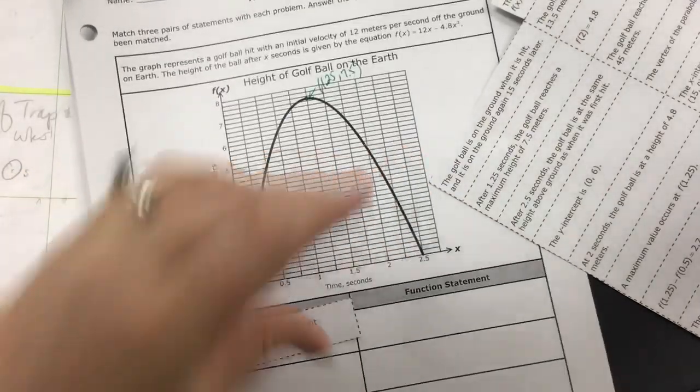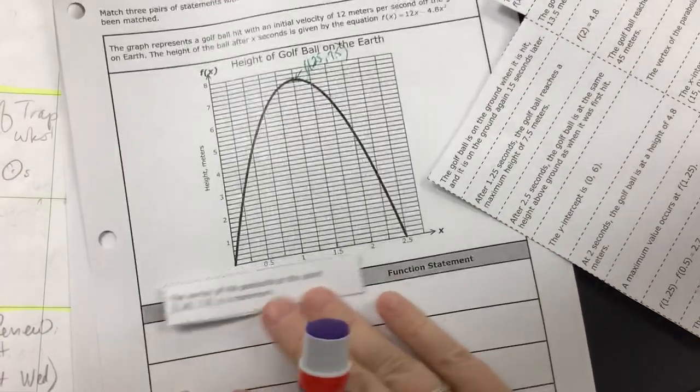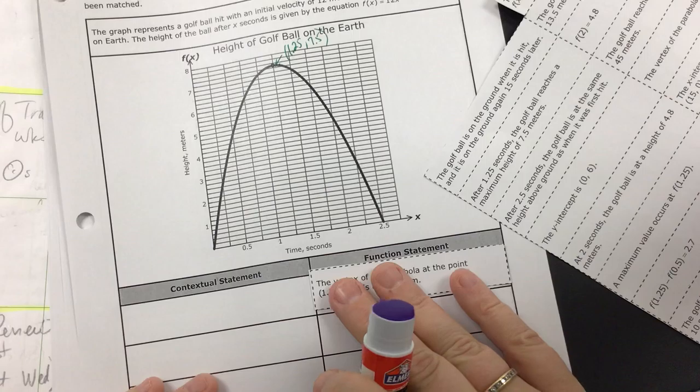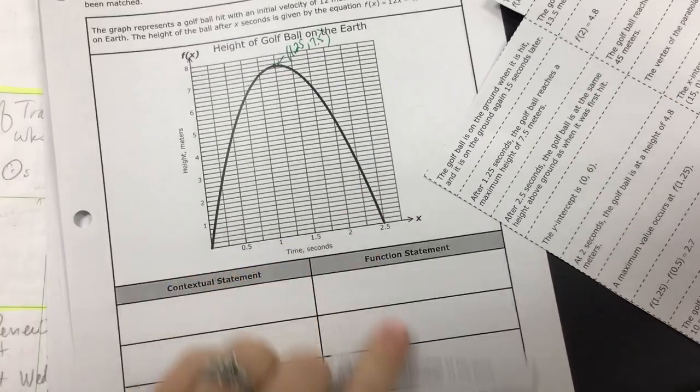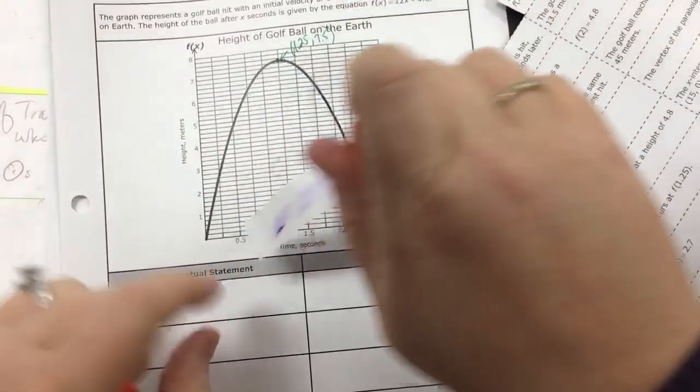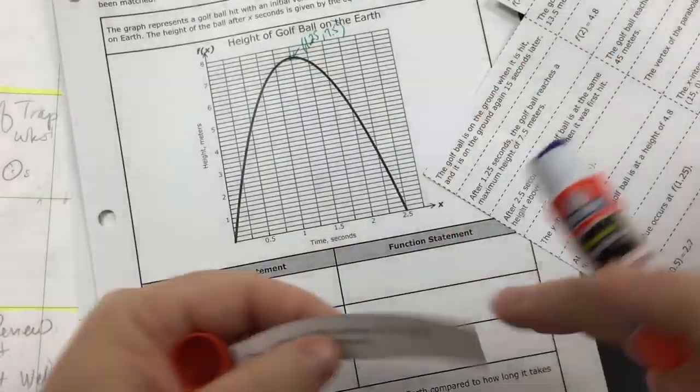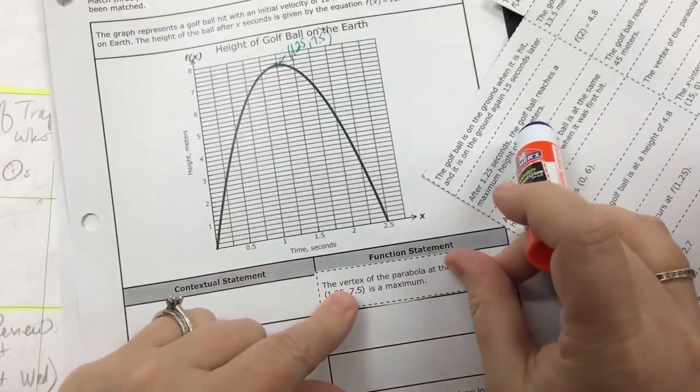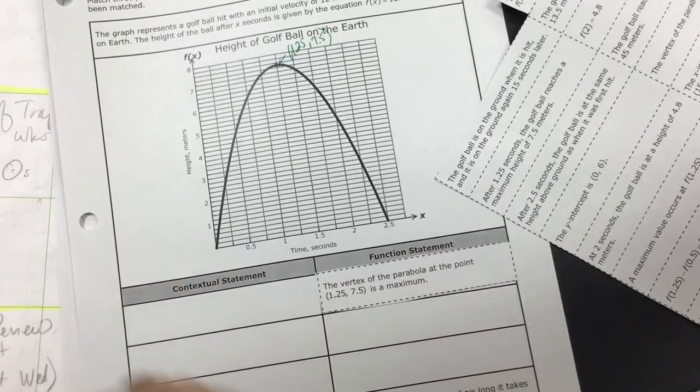And I'm going to tape or glue it. And this is, if it's a vertex, that's a function statement. Context would be it's explaining it in terms of the problem. So I'm going to put a little glue or tape on the back and put it as a function statement.